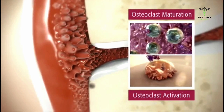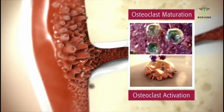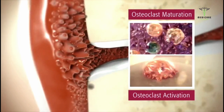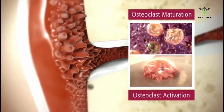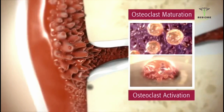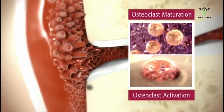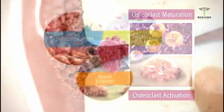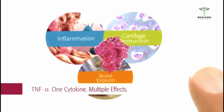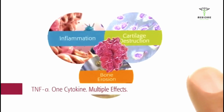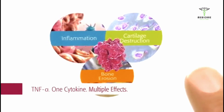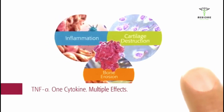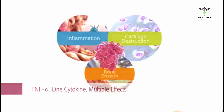The effects of TNF-alpha on osteoclast maturation and activation culminate in focal bone erosions and irreversible joint damage. As we have seen, TNF-alpha plays a key role in the complex pathology of RA.